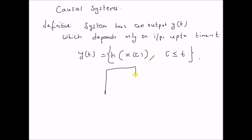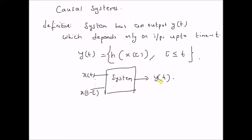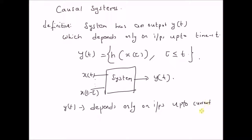That is, the input to a causal system can be x(t) or it can be one of the previous inputs. The system can only take the inputs up to the current instant and the output is a transformation of this input. The output cannot be a transformation or function of the future inputs. That is, y(t) depends only on inputs up to the current instant.